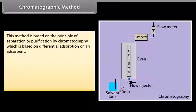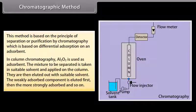Chromatographic method. This method is based on the principle of separation or purification by chromatography which is based on differential absorption on an absorbent. In column chromatography, Al2O3 is used as absorbent. The mixture to be separated is taken in suitable solvent and applied on the column. They are then eluted out with suitable solvent. The weakly absorbed component is eluted first, then the more strongly absorbed and so on. This method is suitable for such elements which are available only in minute quantities and the impurities are not very much different in their chemical behavior from the element to be purified.